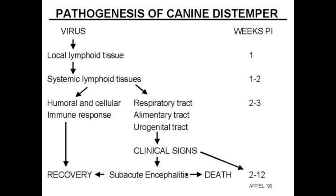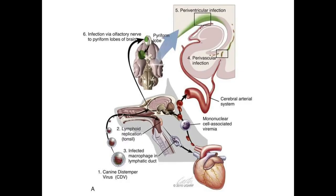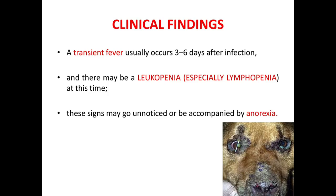At this stage, humoral and cellular immune response may cause recovery from disease; otherwise the virus moves to the respiratory, alimentary, or urogenital tract, causing clinical signs like subacute encephalitis and can cause death. The virus replicates in tonsils and other lymphoid tissues, then moves to the lymphatic duct, systemic lymphatic circulation, then to perivascular infection, leading to periventricular infection and ultimately the nerves and brain.